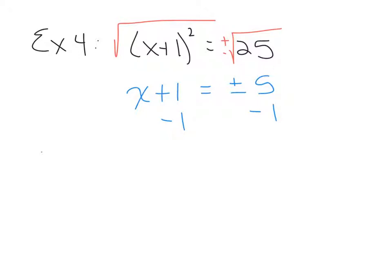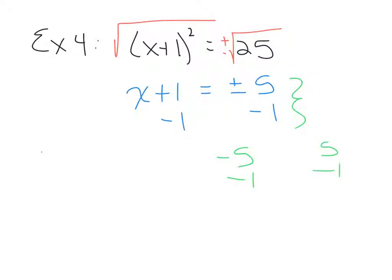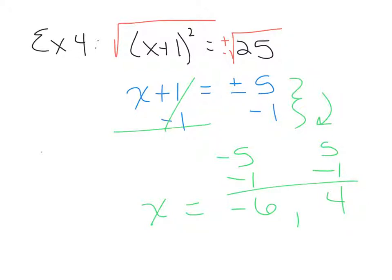Since we have a real number result where the radical is gone, we need to separate the two cases. So we get positive 5 minus 1 and negative 5 minus 1. That gives us 4 and negative 6. So x equals 4 or x equals negative 6 — those are our two solutions.